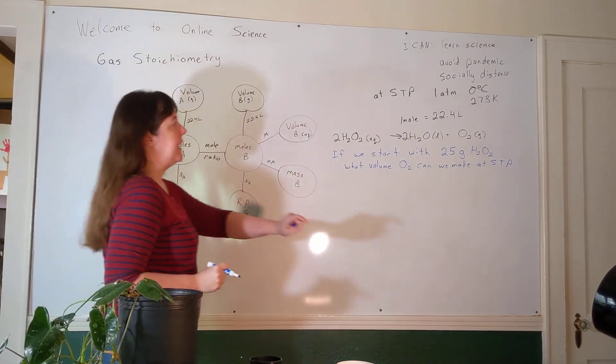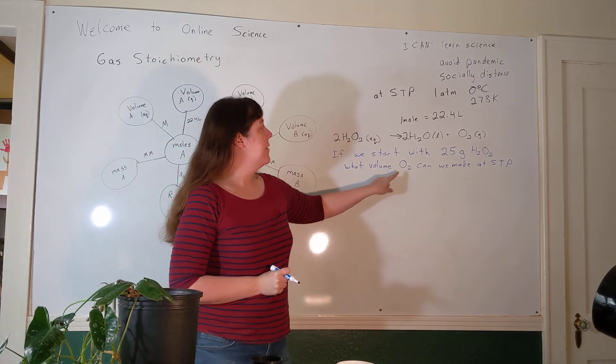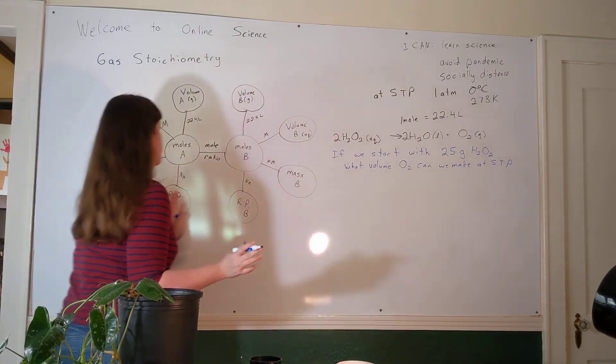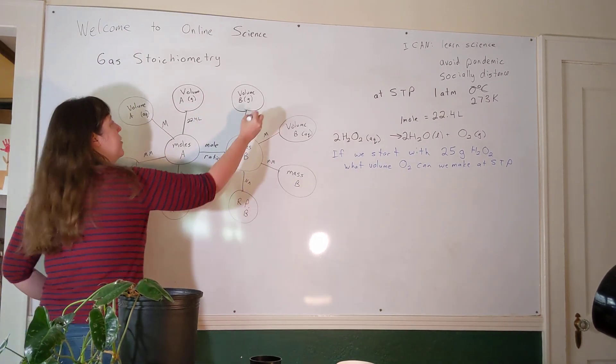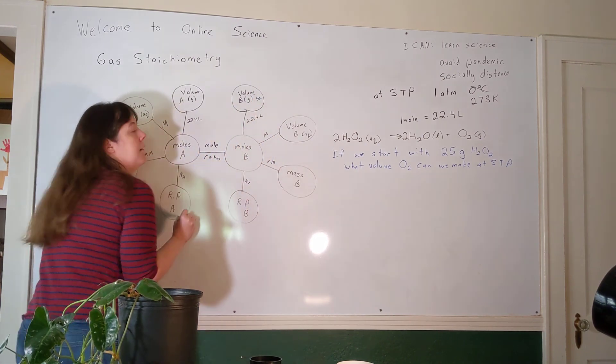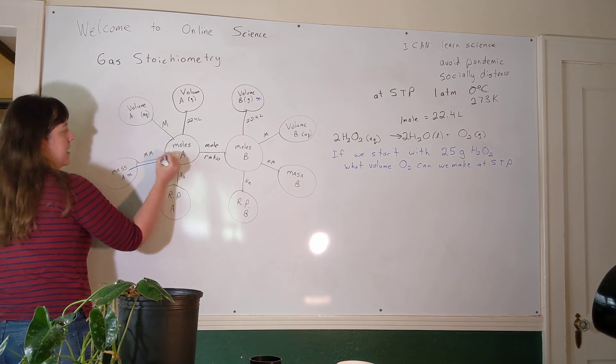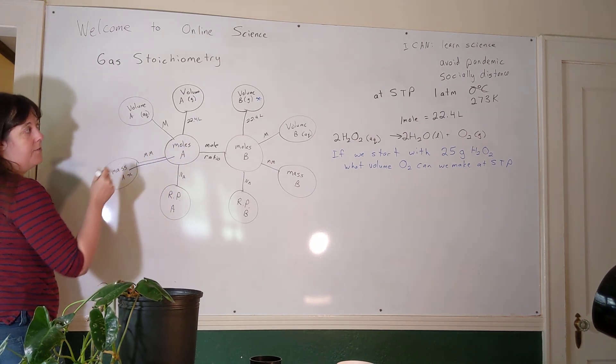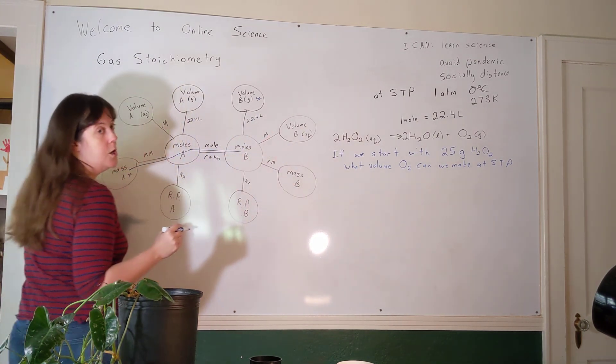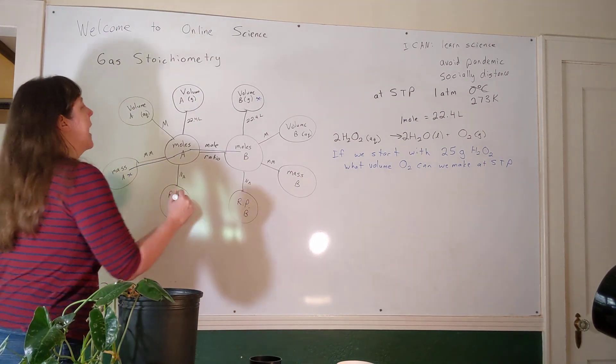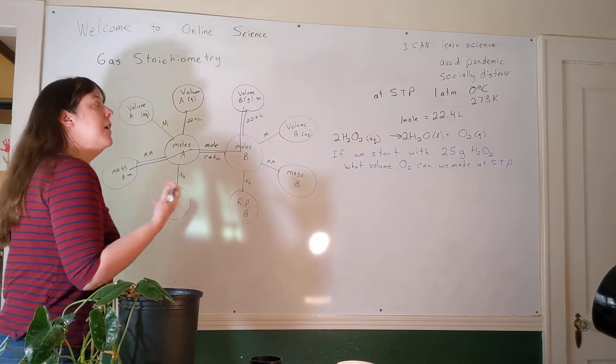Now that 'at STP' is important - it's going to let us use that 22.4. So this is a stoichiometry problem. It gives us an amount of one chemical substance, the H2O2, and asks us for an amount of another chemical substance, the O2. If we look at our islands, we're going to start at mass of A and we need to go to volume of B. We're going to go from the mass of A to the moles of A using the molar mass of hydrogen peroxide, go from moles of A to moles of B using the mole ratio from the balanced equation, and then go from moles of B to volume of B using our 22.4 liters.